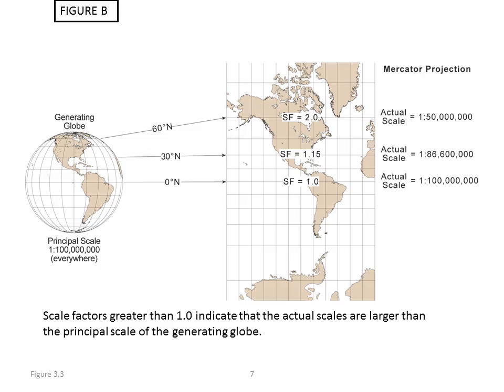Here's an example of scale factor. Scale factor represents the scale relationship between a point or an area on the generating globe versus the resulting map. And in this particular case, this is a Mercator map projection, which is intended to draw latitude and longitude lines as being straight lines with right angles.